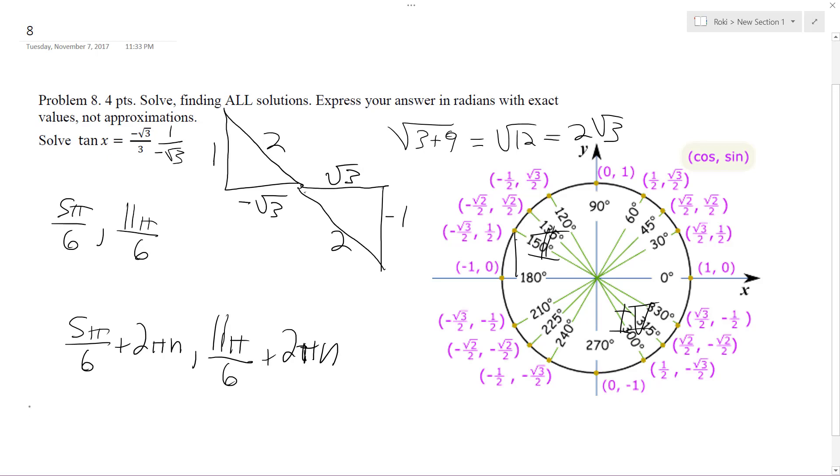Or, more eloquently, you could actually rewrite it as π n minus π over six, because if you plug in one, then you get five π over six. If you plug in two, you get eleven π over six, so you could write it as this. Okay, hope that helps.